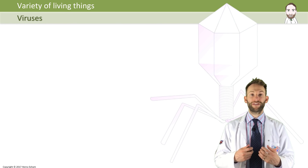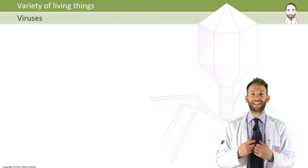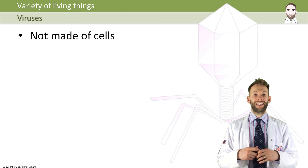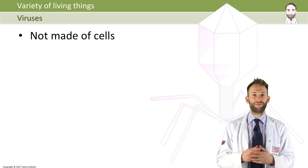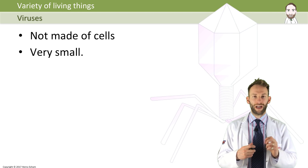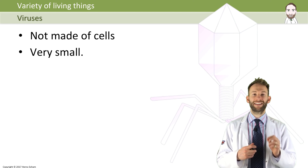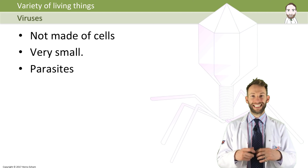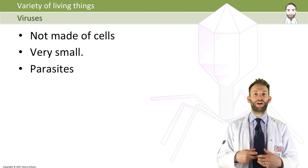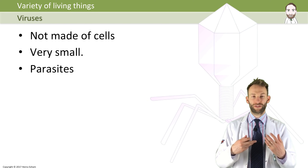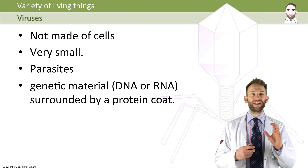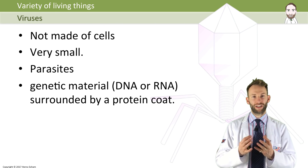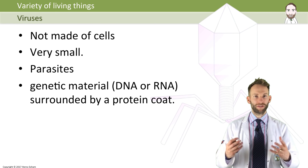Viruses are not classified as living things because they're not made of cells and do not carry out the characteristics of living things. They're actually much smaller than even bacterial cells — tiny, tiny little things. They are all parasites, meaning they live and reproduce inside a host and cause the host harm. They can't reproduce without a host. They are made of genetic material, either DNA or RNA, surrounded by a protein coat — no membrane, no cytoplasm, no cell wall.